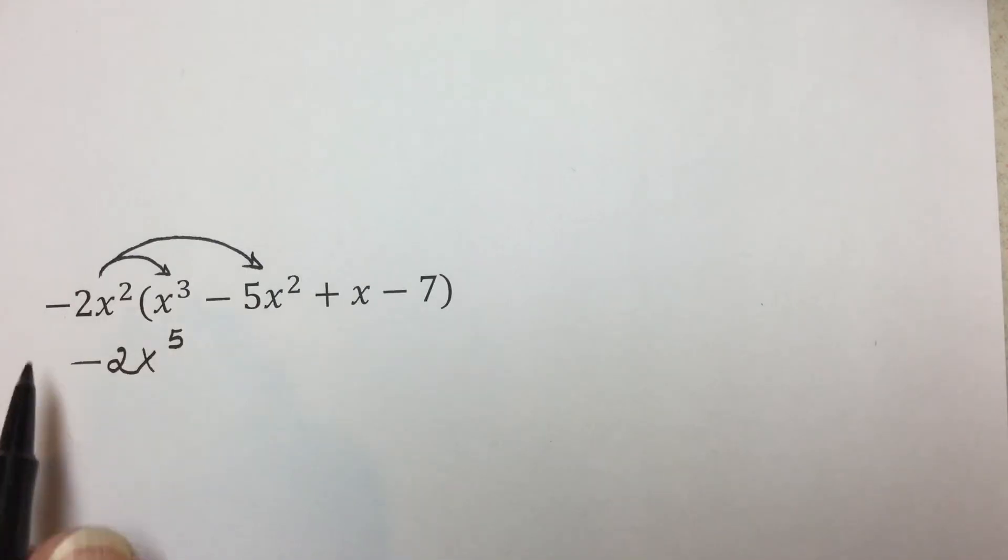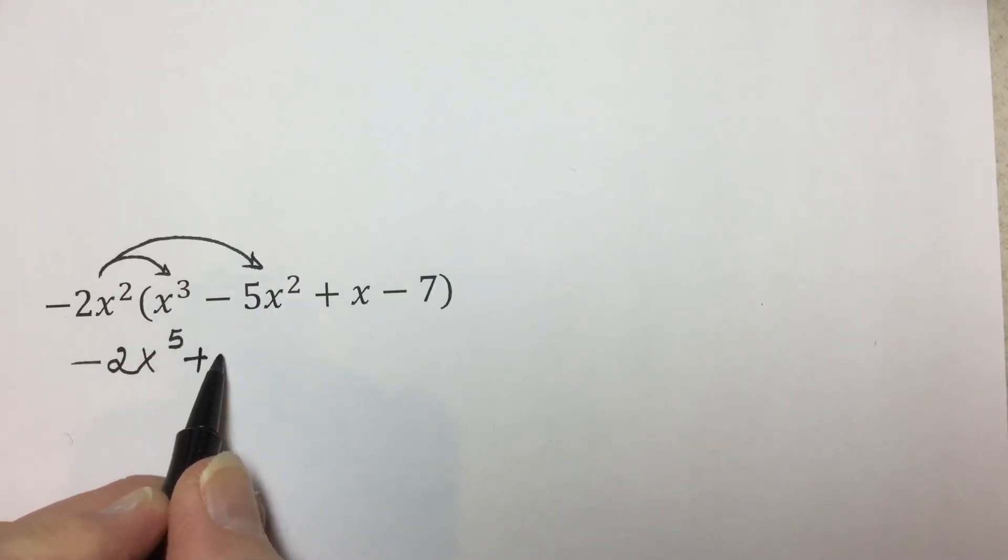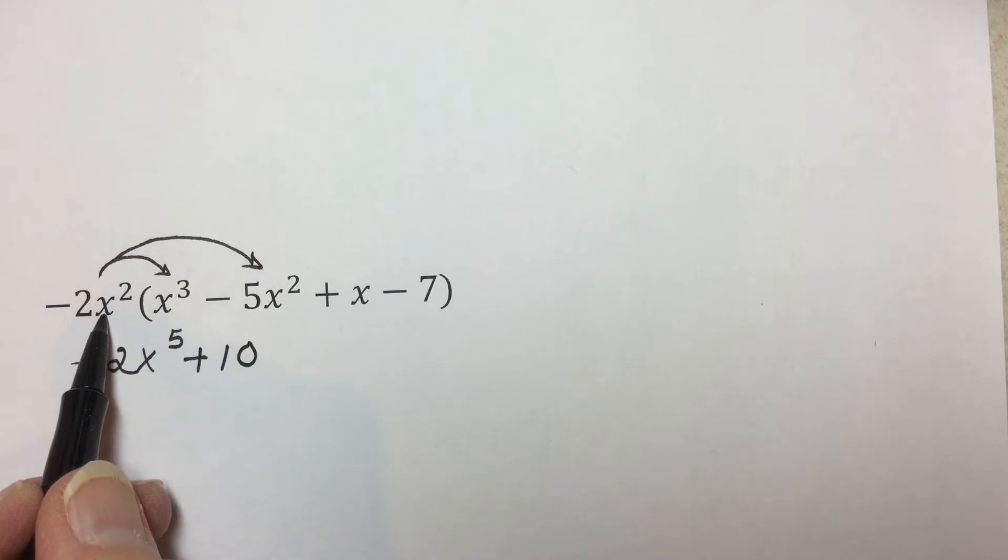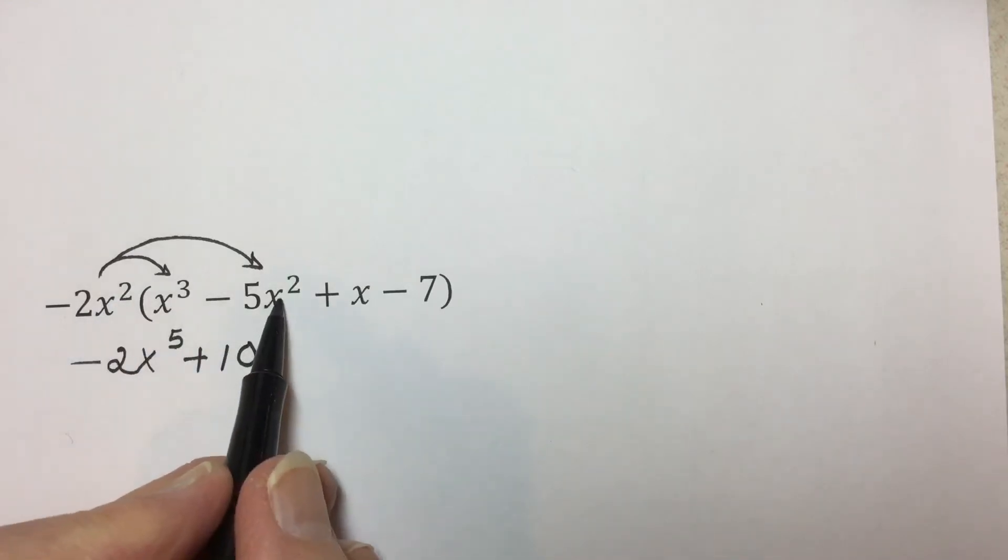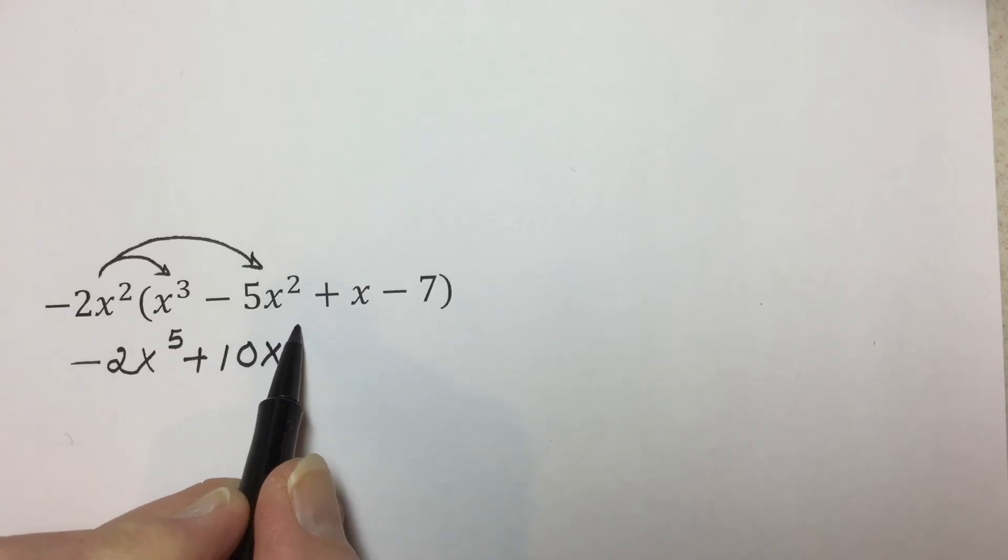Multiplying the second term by the monomial, a negative two times a negative five, when we multiply the constants together, results in a positive ten. One common base of x to the second times x to the second. We add those exponents together, so we end up with x to the fourth power.